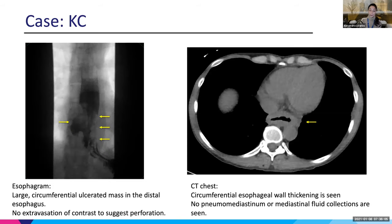We got an esophagram, which showed the area of disease in the mid to distal esophagus. We also got a CT scan to see if there was anything beyond the esophagus, and it just showed circumferential wall thickening — nothing that was very useful at this time. So the question was what to do next.